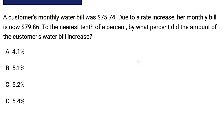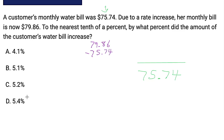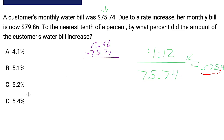Let's look at one more — try this by yourself first. A customer's monthly water bill was $75.74, so this is our original. By what percent did the amount increase? Our original is 75.74; due to a rate increase, her monthly bill is now $79.86. The top is the difference: 79.86 minus 75.74. Throw that into your calculator — that's 4.12, which is our numerator. Divide 4.12 by 75.74 and the number should be 0.054. Moving the decimal over two places gives us 5.4%.